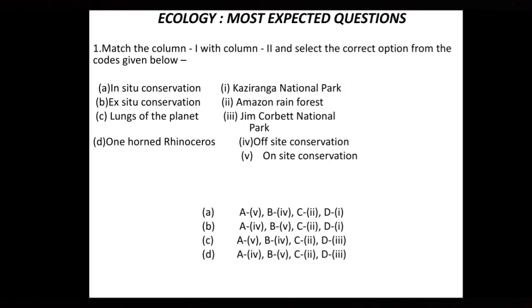The first question is: match column 1 with column 2 and select the correct options from the codes given below. In the first column there are A, B, C, D — four options are provided — and in column B, five options are shown.